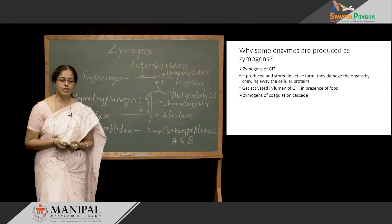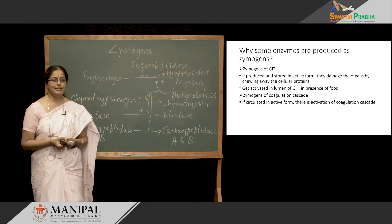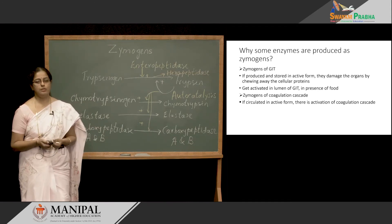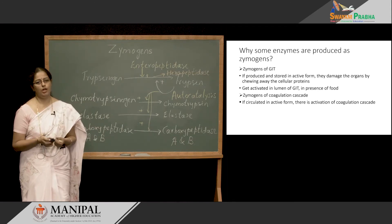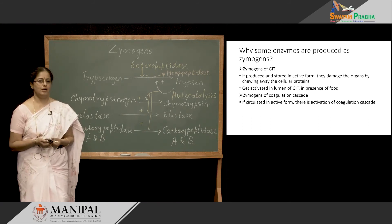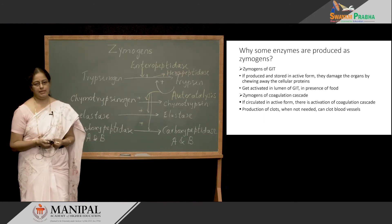Regarding zymogens of the coagulation pathway — if they circulated in active form, they would activate the coagulation pathway and produce clots. This production of clots is very damaging to the system whenever it is unnecessary.